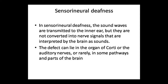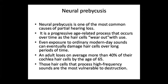These are the two types of deafness. The next disease is neural presbycusis. This is a very common partial hearing loss, mainly seen in adults. It is a progressive, age-related process — hearing loss that develops over time as the hair cells wear out with use.